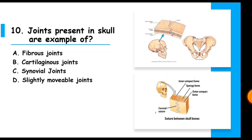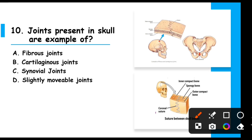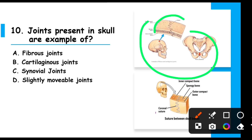MCQ 10: Joints present in the skull are an example of — the joints of the skull are known as fibrous joints, and the skull joints are examples of fibrous joints.